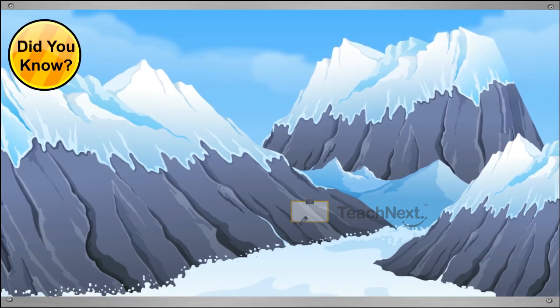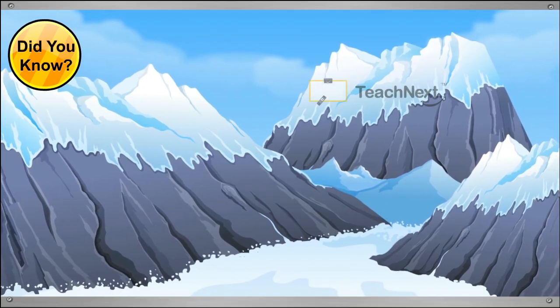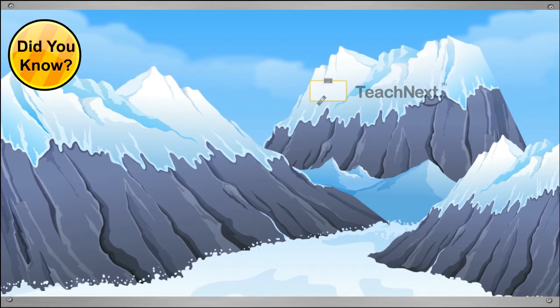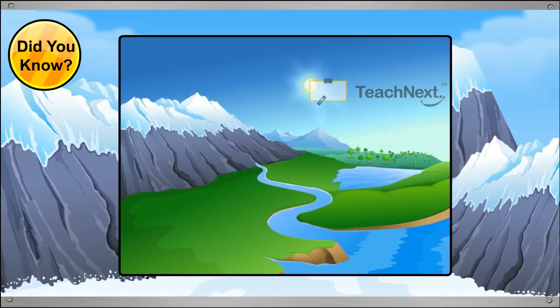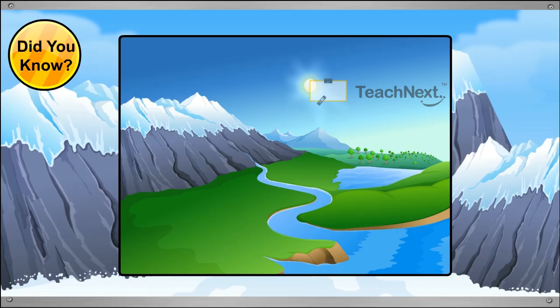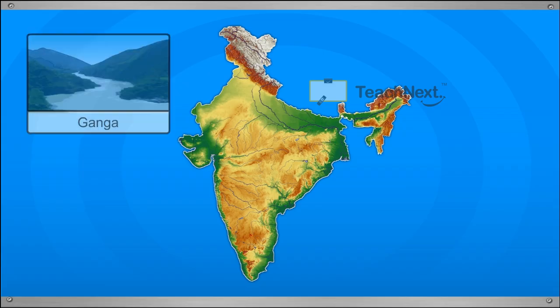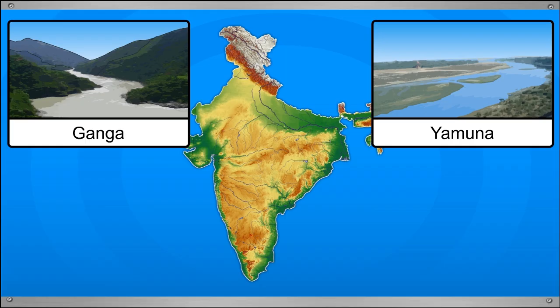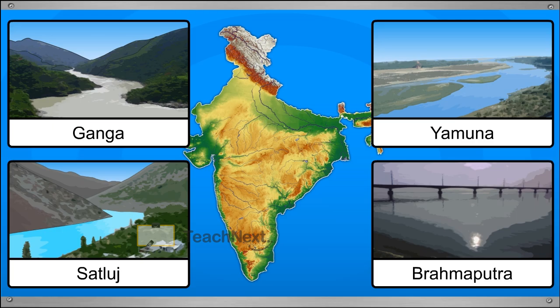Do you know what happens when the snow in these regions melts? When the snow in these regions melts, the water flows down as rivers and reaches the plains. Rivers such as the Ganga, Yamuna, Satlaj and Brahmaputra start in the Himalayan mountain ranges and flow towards the plains.